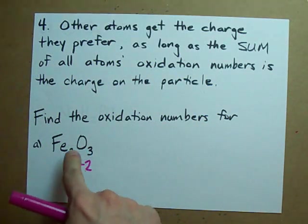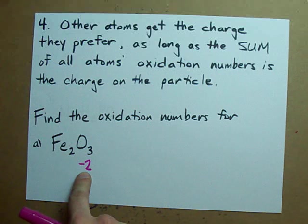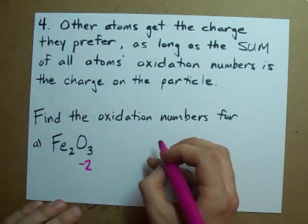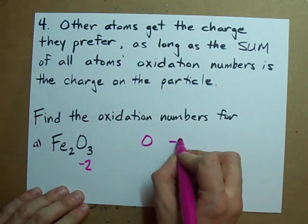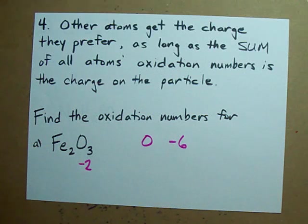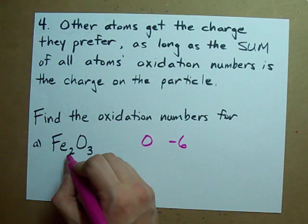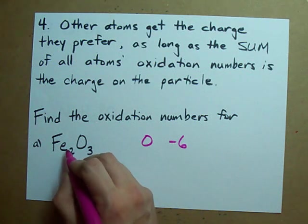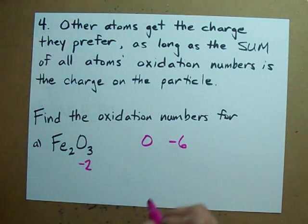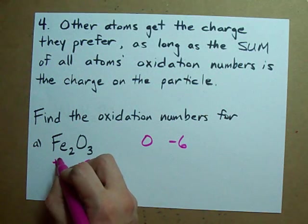I've got three oxygens, each contributing minus two. So in total, O is contributing minus six to the total oxidation number. I've got two irons, and those two irons have to cancel out this minus six.